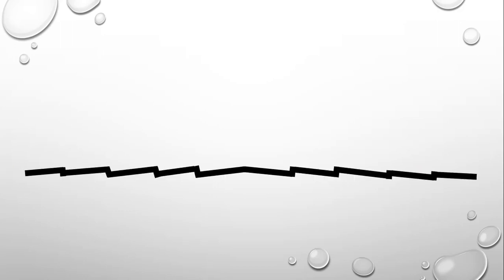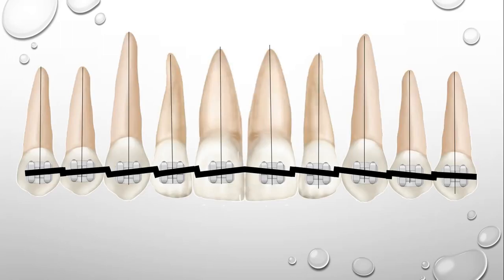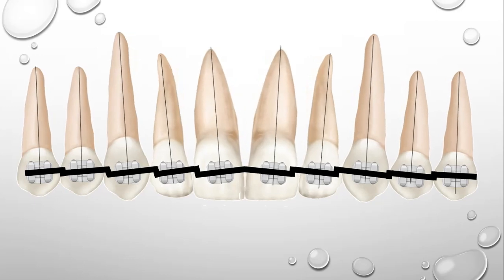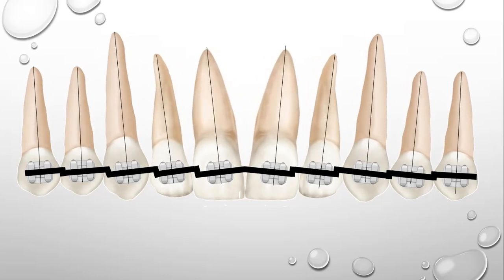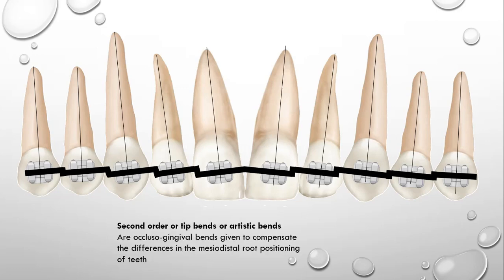So what is the solution? The solution was second-order bendings in the finishing rectangular wires. When you place this bent wire into the standard edgewise brackets, you regain the mesiodistal angulations required for ideal aesthetics and ideal occlusion. These bends in the vertical plane are known as second order bends. By definition, second order, or tip bends, or artistic bends, are occlusogingival bends given to compensate the differences in the mesiodistal root positioning of the teeth.